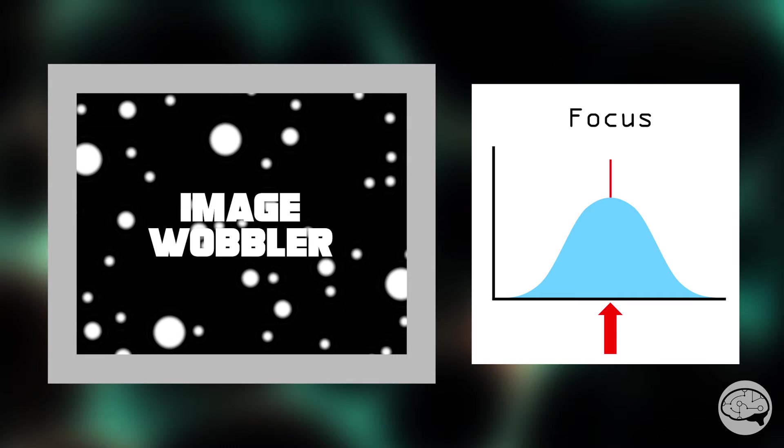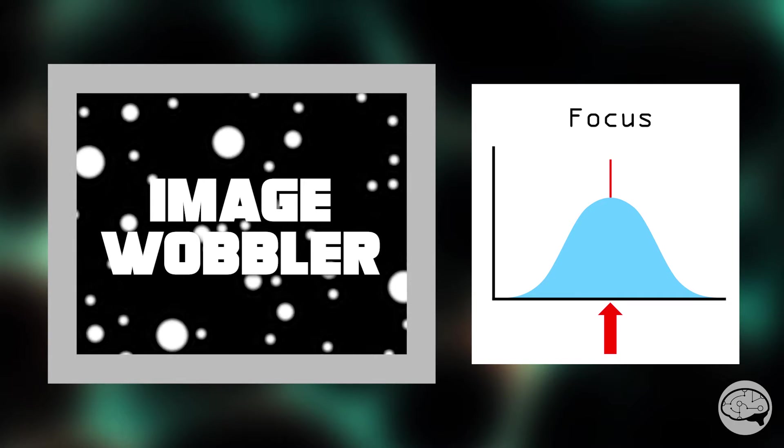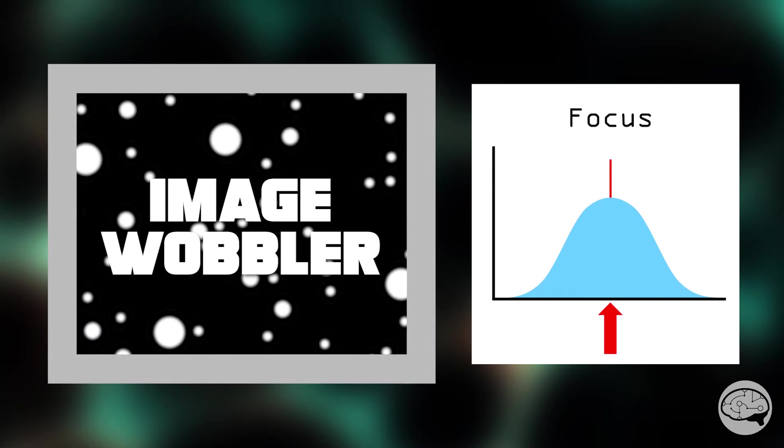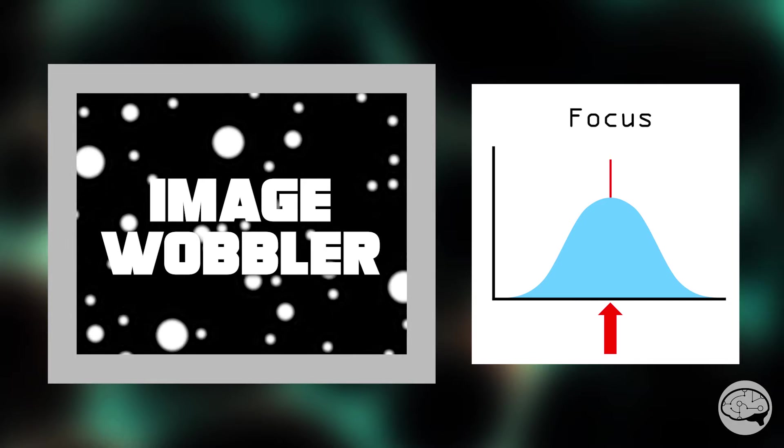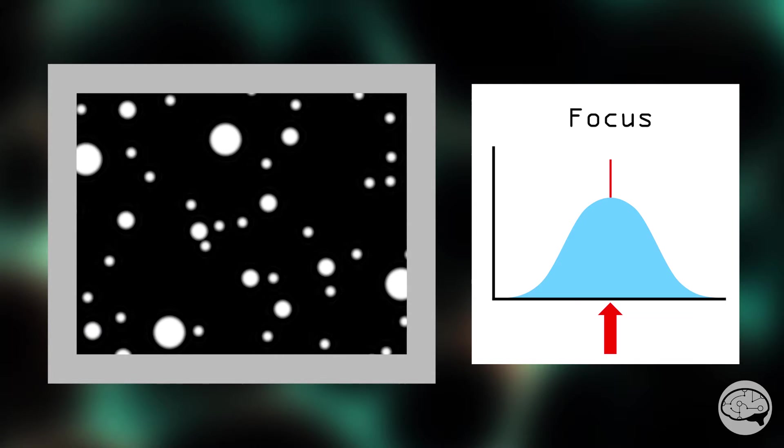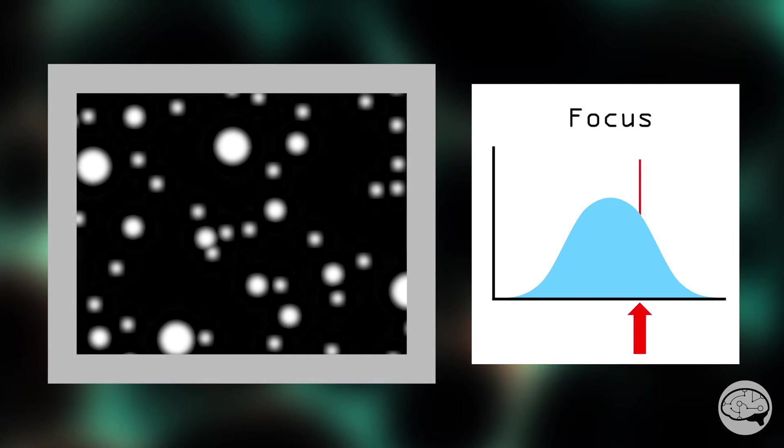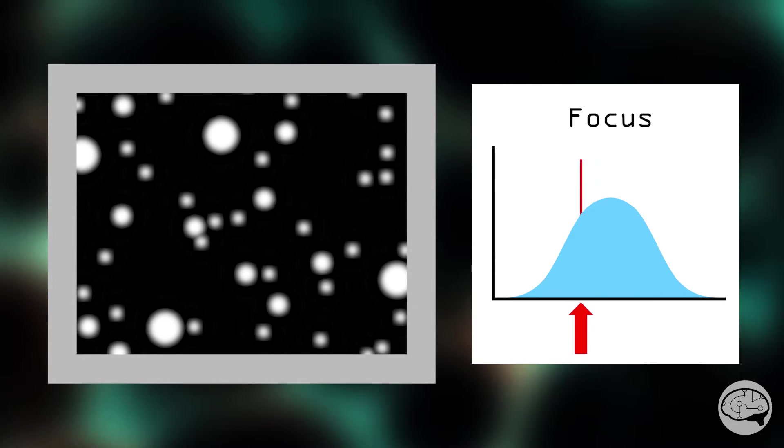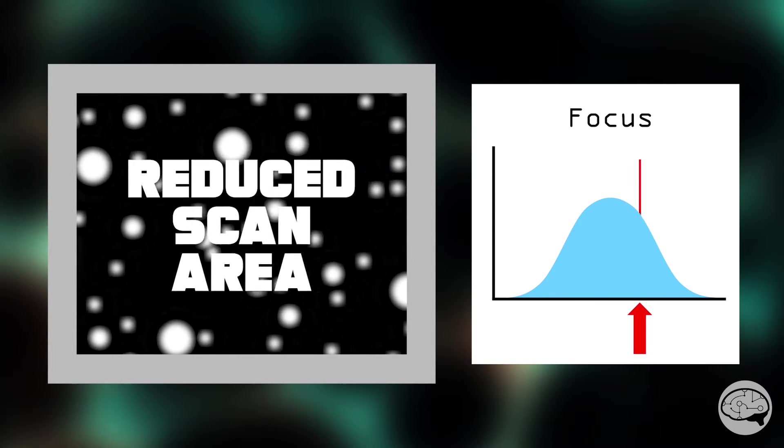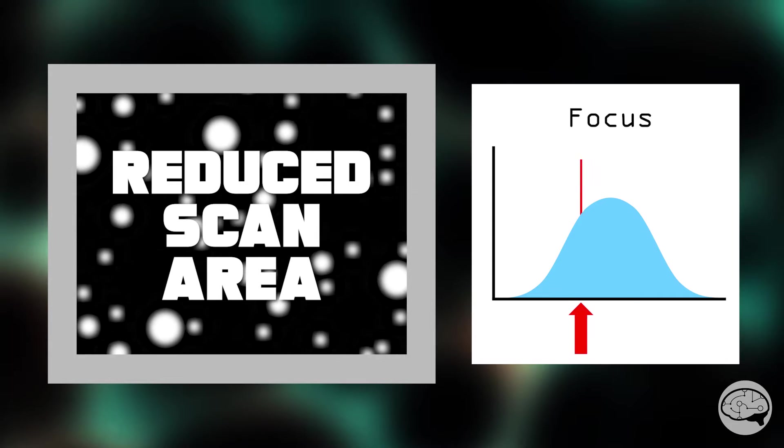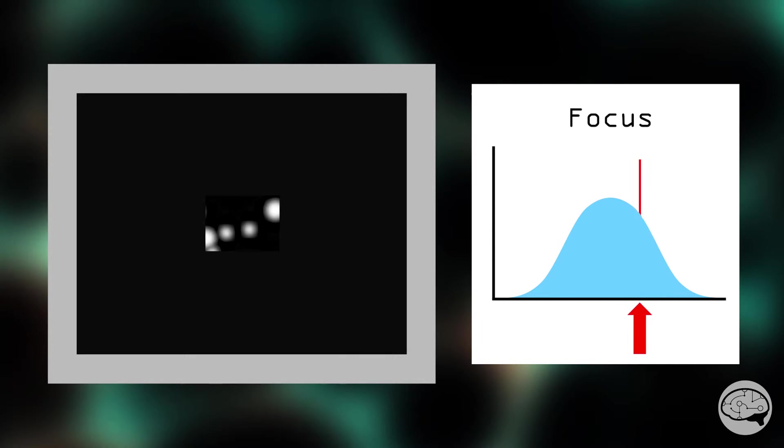To do that, we'll turn on the image wobbler. Depending on the brand of microscope you have, this might be labeled something different, like aperture align or something similar. What this does is it basically changes the focus back and forth for us, so our hand doesn't fall off. The next important tool we'll want to deploy is the reduced scan area, which looks something like this when it's turned on. Now you can do these alignments using the whole screen if you want, but the reduced scan area honestly just makes it a lot easier to work with.